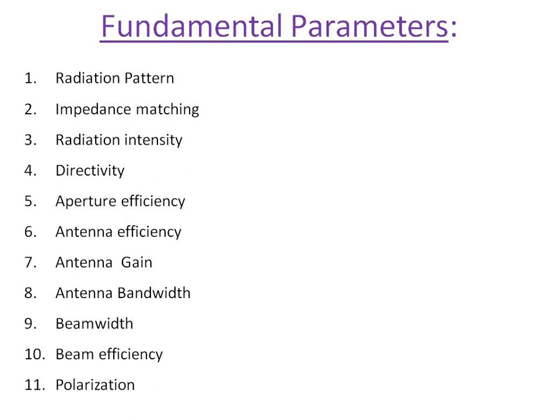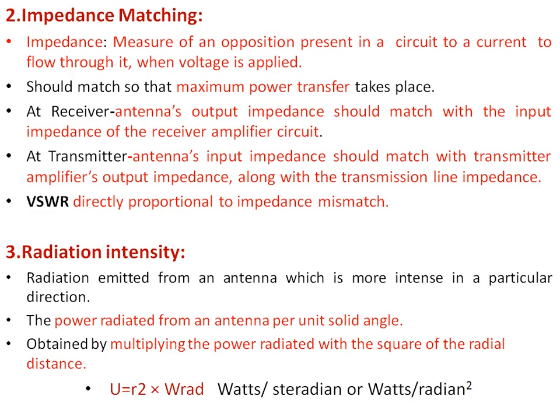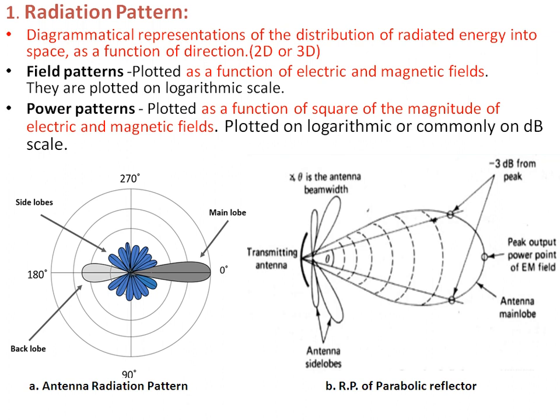Now we will see the different fundamental parameters of antenna — all total 11 parameters which we will discuss. The first will be the radiation pattern, impedance matching, radiation intensity, directivity, aperture efficiency, antenna efficiency, antenna gain, antenna bandwidth, beam width, beam efficiency, and polarization. First we will go through the radiation pattern of an antenna.